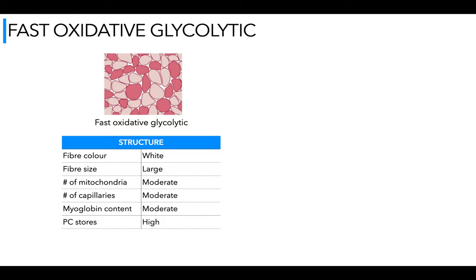PC stores are high — we've got a large fiber size and we do work quickly here. It is suited for speed, strength, and power, so you'll need phosphocreatine in the muscle to help be a little bit more forceful. Glycogen is high and is used, giving some energy aerobically at higher intensity. Triglyceride — fat stores — are moderate. To use fat stores you have to be working at low intensity or be extremely well trained for glycogen sparing; usually at higher intensity you're using glycogen.